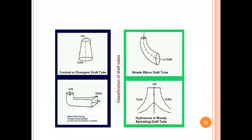There are four types of draft tubes. The first is a conical or divergent draft tube used in the Francis turbine. The second is an elbow tube with circular cross section at inlet and rectangular outlet, used for the Kaplan turbine. The third is a simple elbow draft tube with both circular sections but larger outlet area. The fourth is the moody spreading draft tube. The last two are used in special cases depending on site conditions.